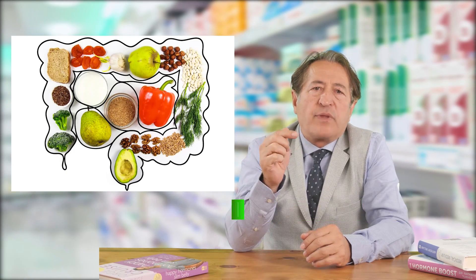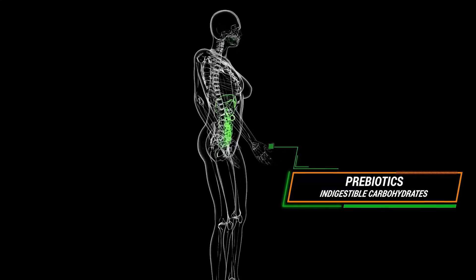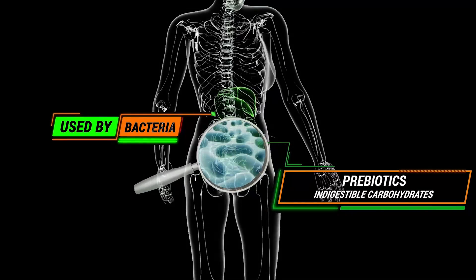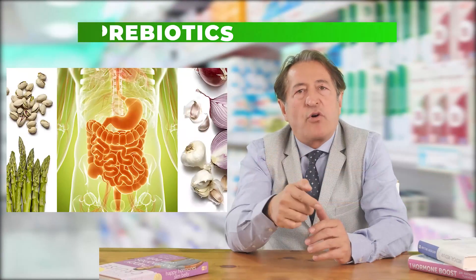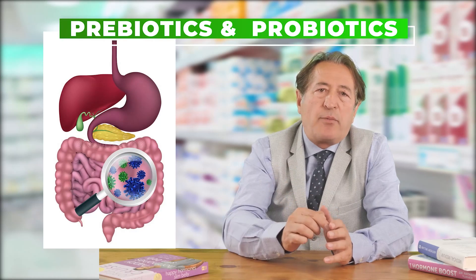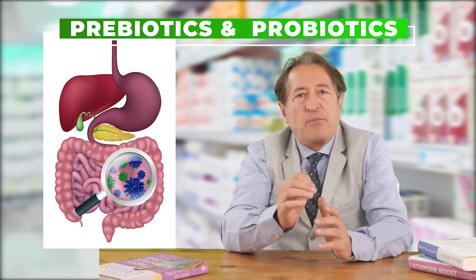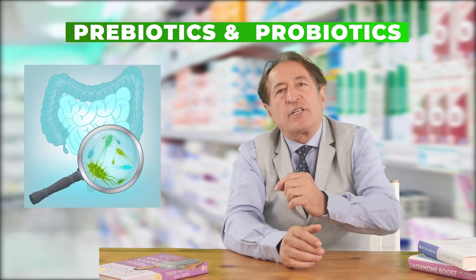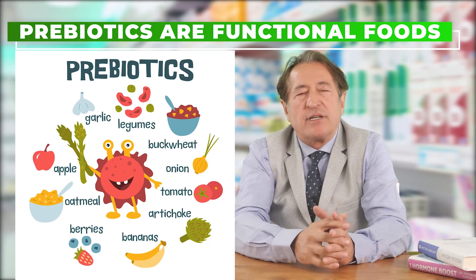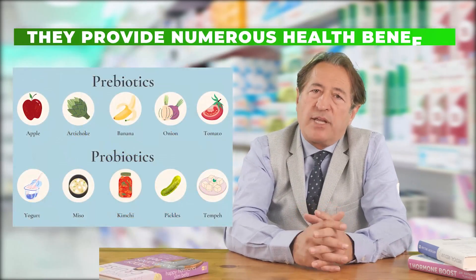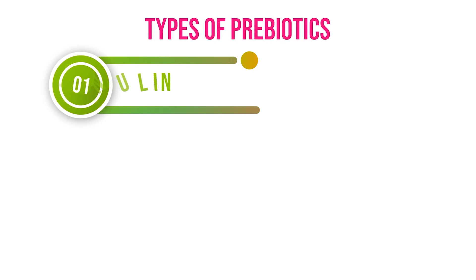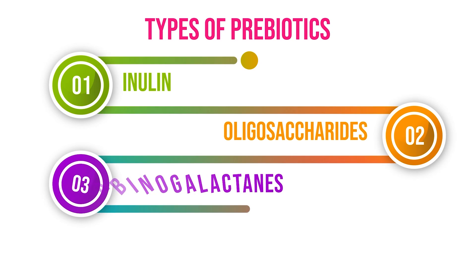Food sources for prebiotics. Prebiotics are made up of indigestible carbohydrates — fibers — that are used by bacteria in the colon to provide health benefits. A prebiotic found naturally in foods cannot be broken down or absorbed by the digestive system. The beneficial bacteria use this fiber as a food source through a process called fermentation. Prebiotics are considered functional foods because they help treat diseases and improve health conditions. Currently, there are three main documented types of prebiotics: inulin, oligosaccharides, and arabinogalactans.